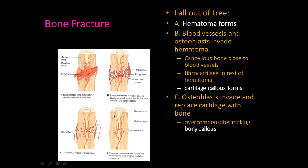Over seven or eight months, you'll get rid of that callus. The bone will become compact bone on the outside and look like the rest of the bone. There may still be a little remnant of the fracture — you may see a line on the x-ray. This healing process does depend on the type of fracture.